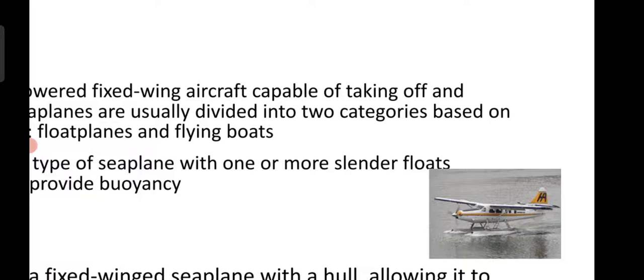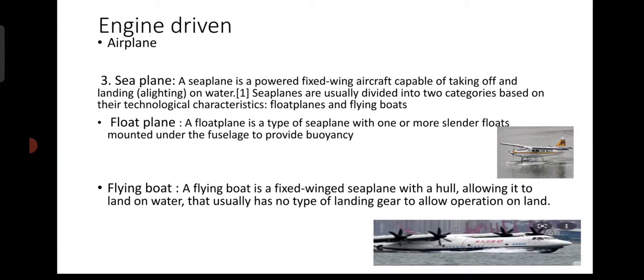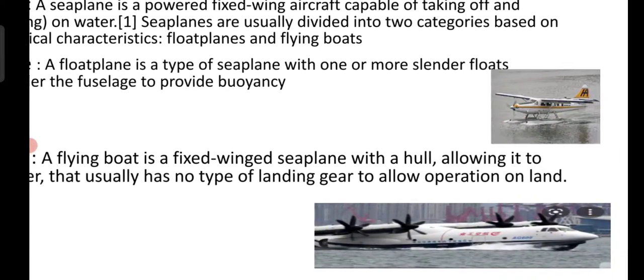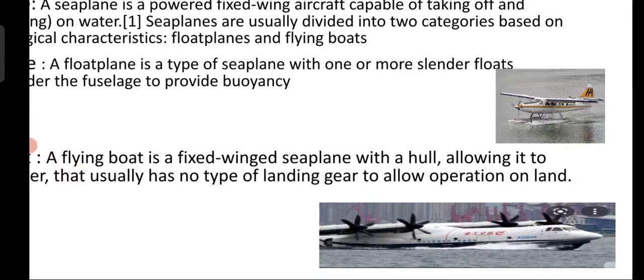The second type of sea plane is flying boat. A flying boat is a fixed-wing sea plane with a hull allowing it to land on water, and it usually has no type of landing gear to allow operation on land. In a flying boat, the underside of the fuselage is shaped like a boat so it can easily take off and land from water, but it does not have any landing gear and cannot operate on land.